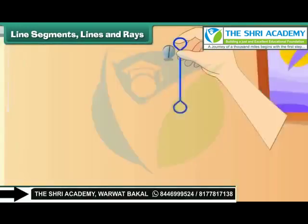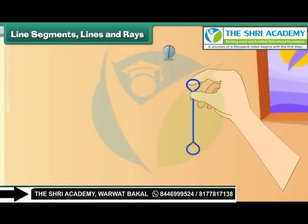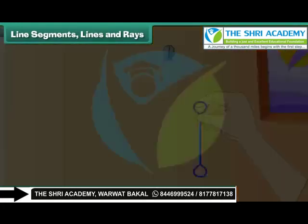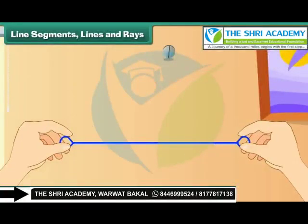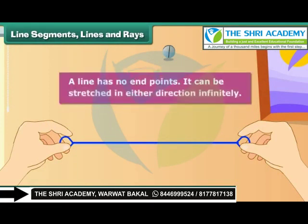Let us now remove the nail and stretch the rubber in the other direction. We now have a line. A line has no end points.